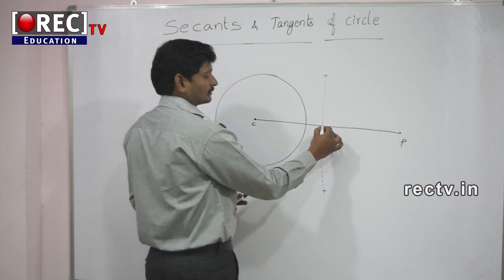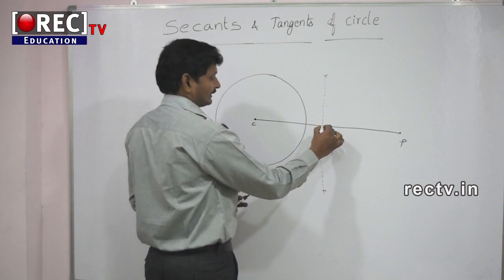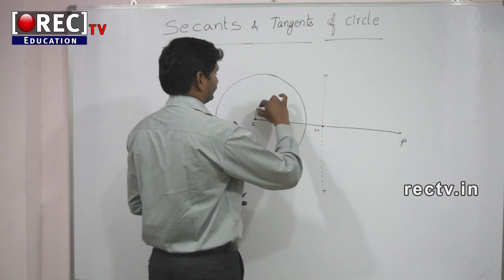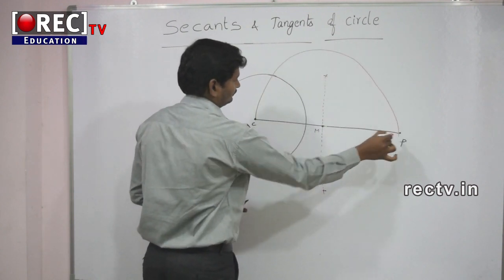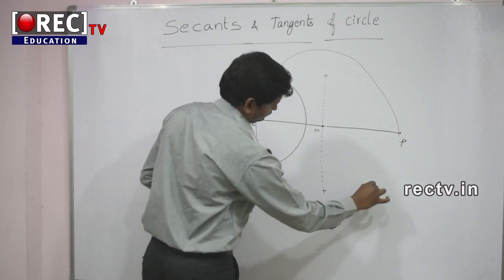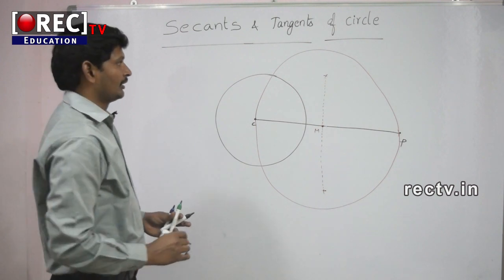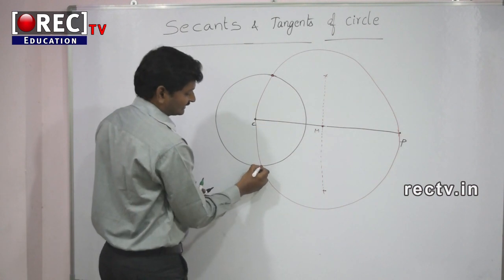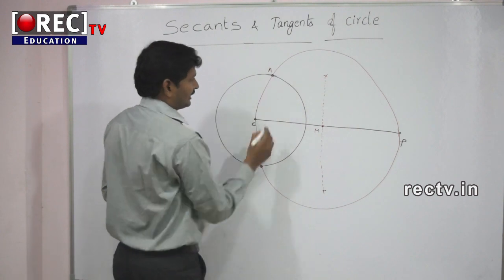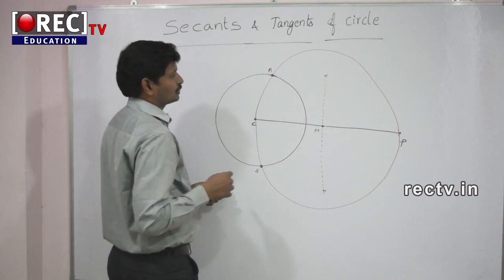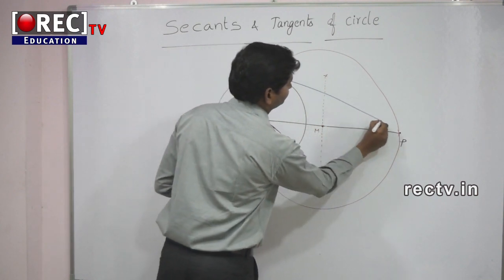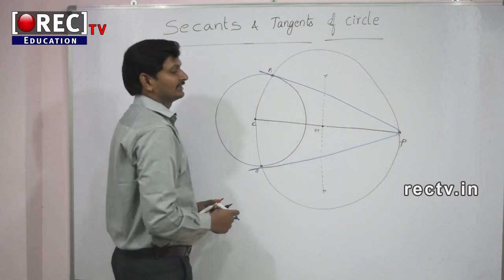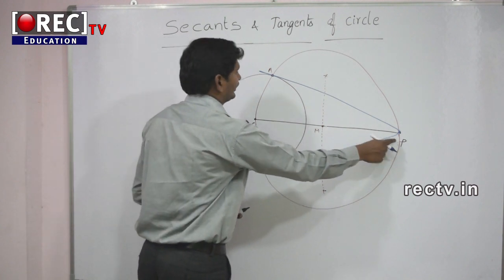The intersection gives the midpoint M of CP. From point M, taking CM as radius, draw a new circle. That circle passes through both points C and P. This new circle cuts the given circle at two points A and B. Join PA and PB. These two are the required tangents from the external point P to the given circle.